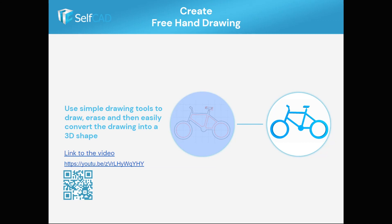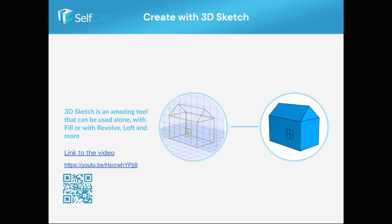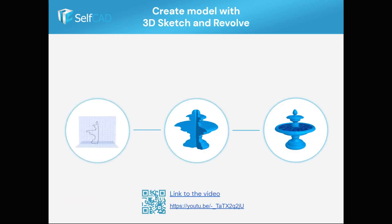Let me show you some examples. In this example, you can see how to sketch a house and use the Fill Polygon tool to create a 3D mesh. The parts are created separately, so you can select and delete the windows and add thickness as needed.